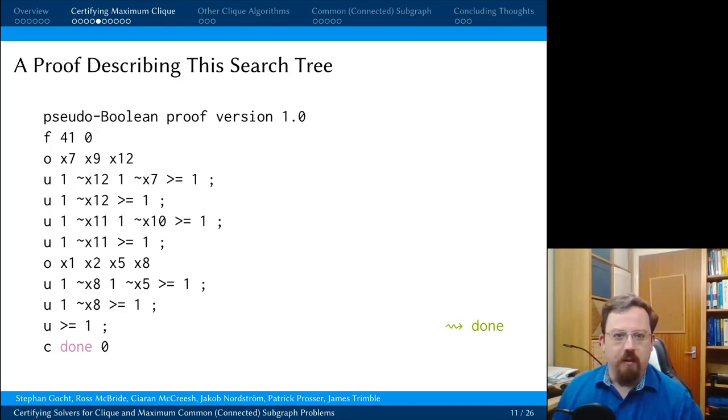So let's look at a proof that describes this search tree. A proof for the veripb verifier begins with a header, which I'll not describe in detail. We have these lines that start with O that correspond to the two incumbents we found. An O line is an objective line, it says check that the thing I'm telling you here is a valid solution to the problem, it is a feasible solution. And then create a new constraint saying that anything we find after this has to be bigger, has to give a better objective function value.